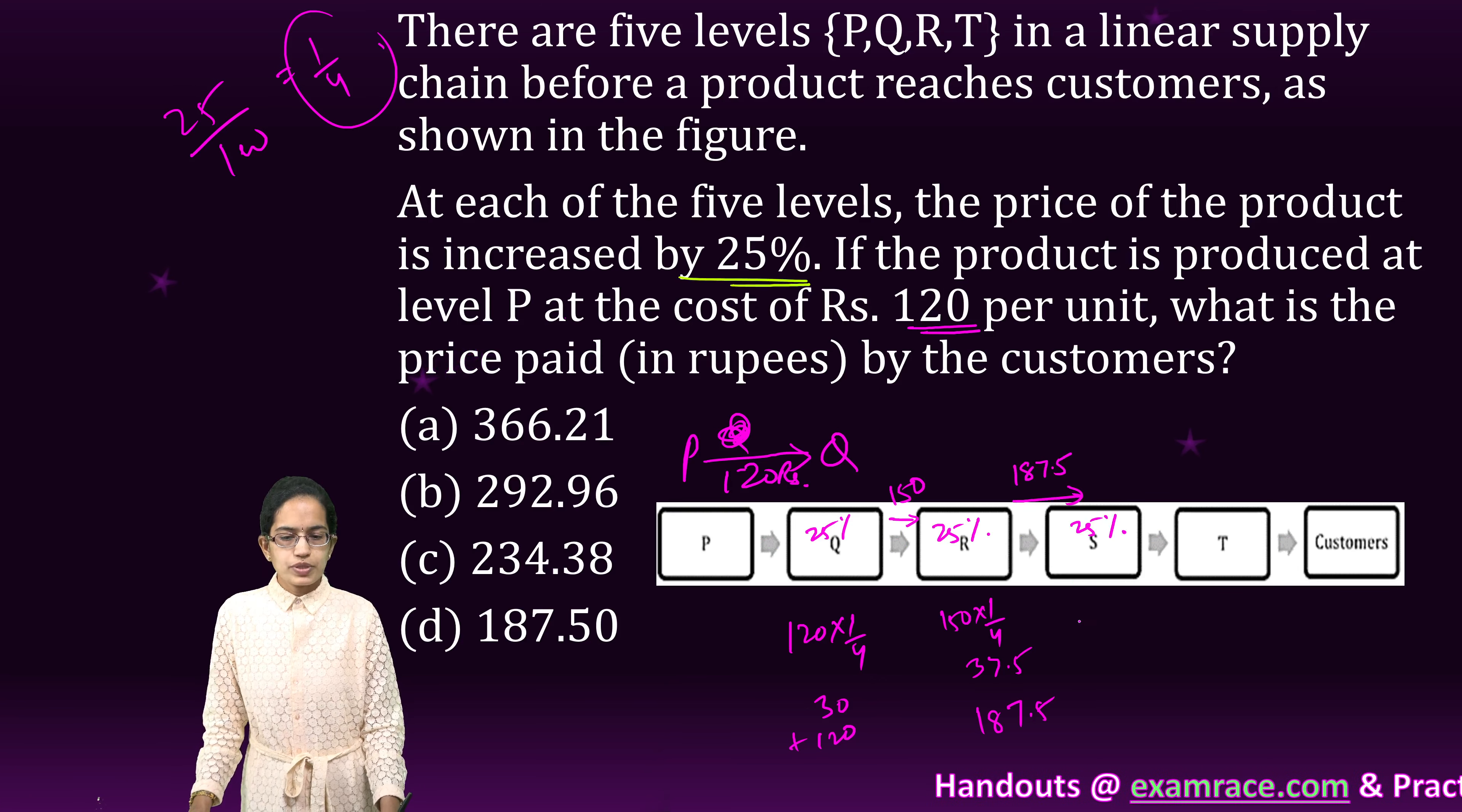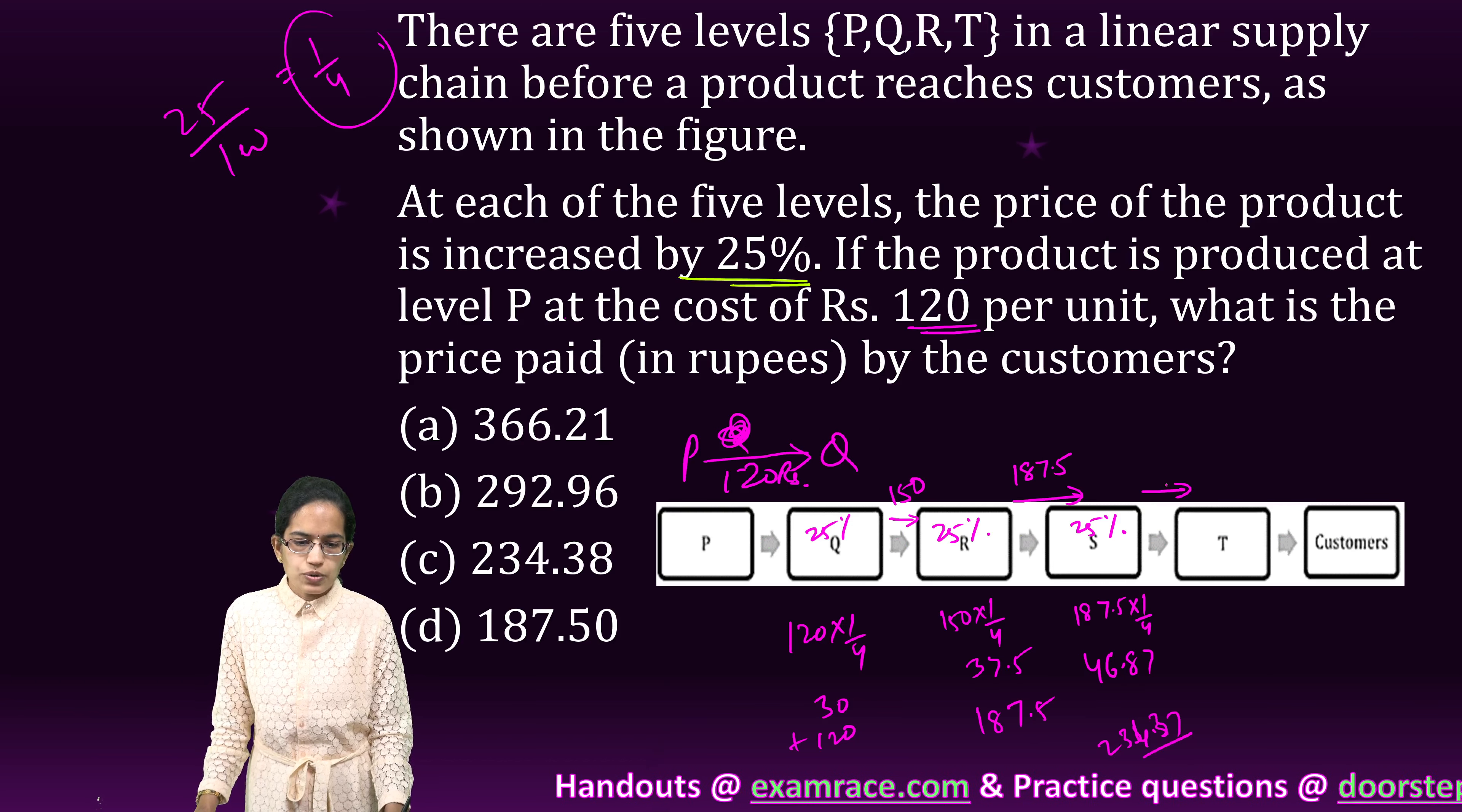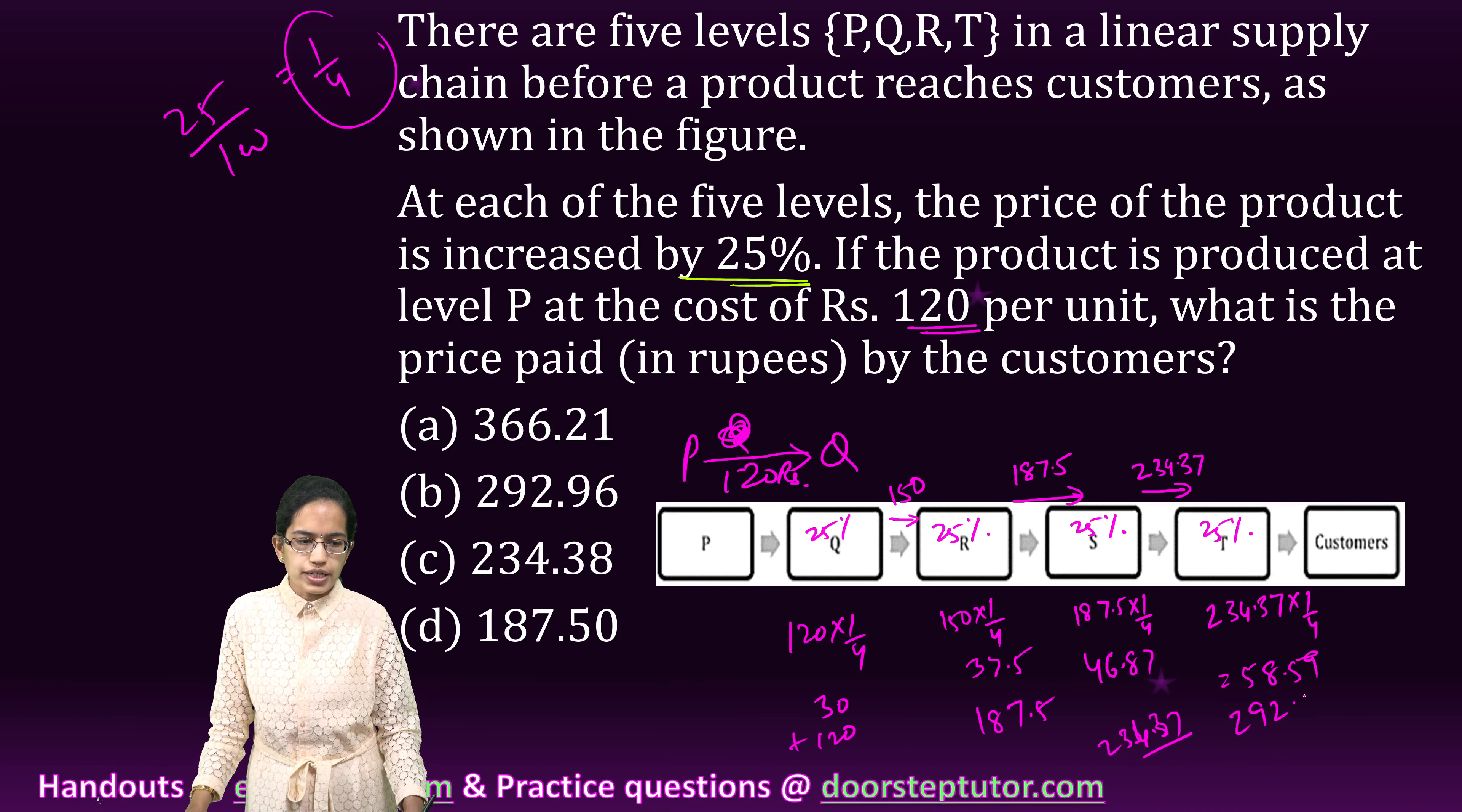Again on this I have a 25% increase. So 187.5, one fourth of it. This gives me 46.8 something. Then I add 46.87 with 187.5 which gives me 234.37. So this arrow becomes 234.37. Now again there is a 25% increase. So 25% of 234.37, that is one fourth of it. I do one fourth of it. Now this comes out to be 58.59.